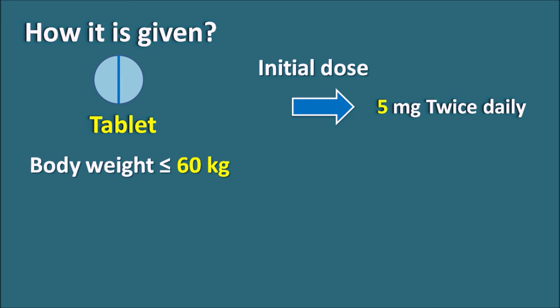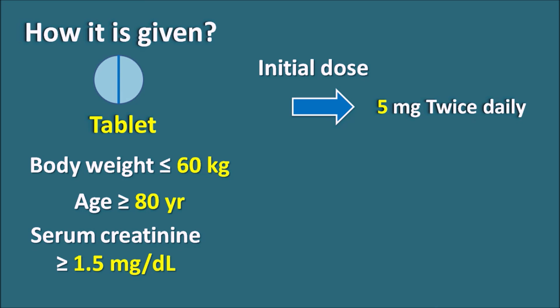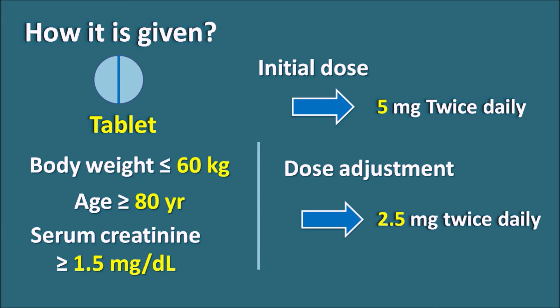In patients with body weight less than or equal to 60 kg, or age greater than 80 years, or serum creatinine greater than 1.5 mg/dL (indicating renal dysfunction), the dose should be reduced to 2.5 mg twice daily. In cases where drugs increase serum levels of apixaban there is a risk of bleeding so the dose should be reduced; where drugs reduce apixaban levels it may lead to treatment failure, so apixaban may be avoided in those situations.